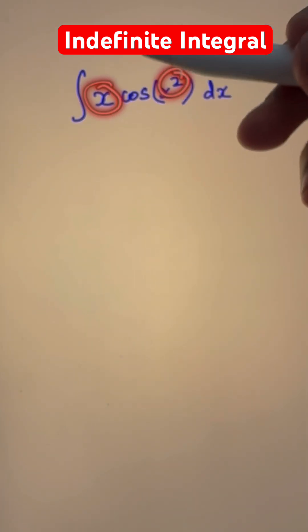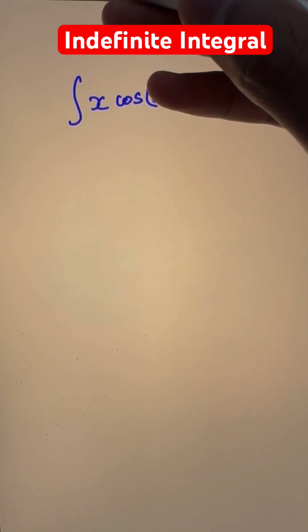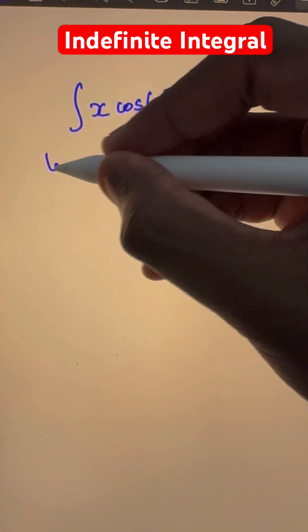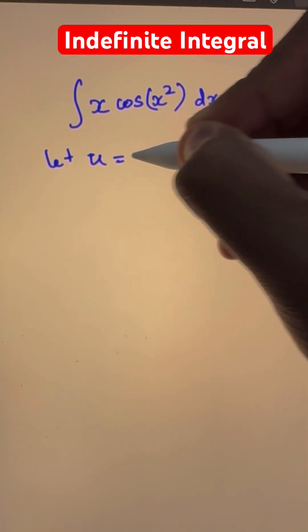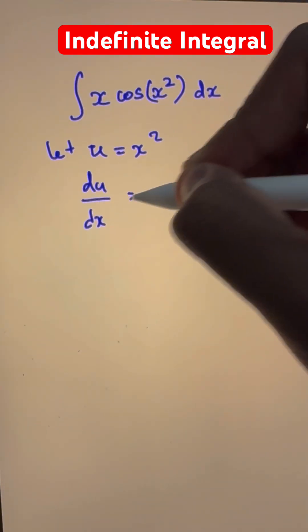We have a function and a part of its derivative, the x term of its derivative in the same function. So we can let u is equal to x squared and now du by dx, which is the derivative, is just 2x.